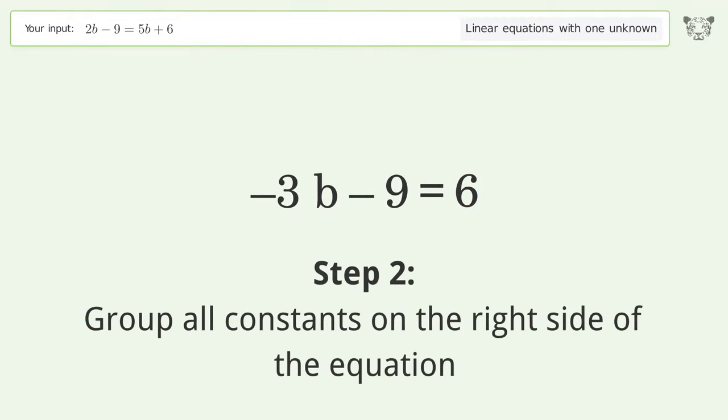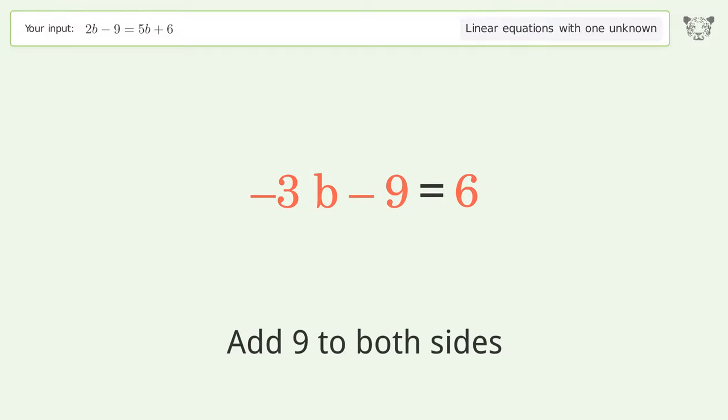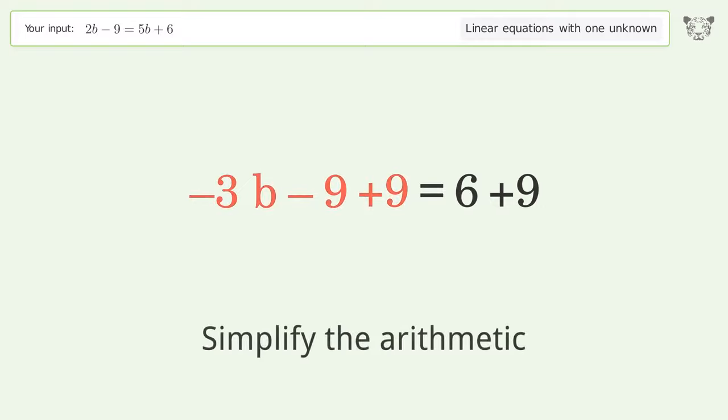Group all constants on the right side of the equation. Add 9 to both sides. Simplify the arithmetic.